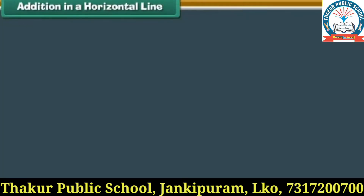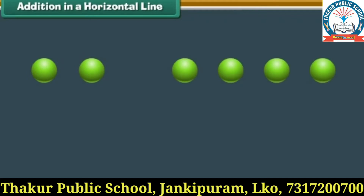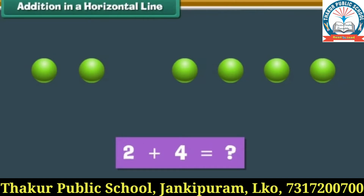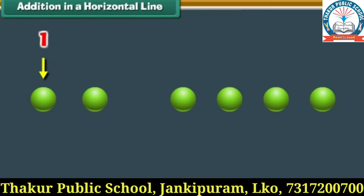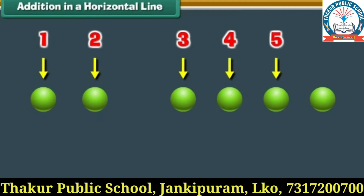Addition in a horizontal line. Let us now use dots to add numbers horizontally. Look at the screen. There are two dots on the left and four dots on the right. What is two plus four? Count the total number of dots on the screen: one, two, three, four, five, six. Therefore, two plus four is six.